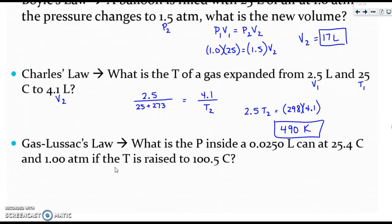In our last video we had just finished discussing Charles's law and its example. Our next example is on the Gay-Lussac law which provides information about pressure and temperature. It says what is the pressure inside a 0.0250 liter can at 25.4 degrees Celsius and 1 atm if the temperature rises to 100.5 degrees.